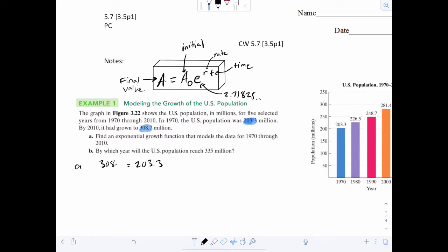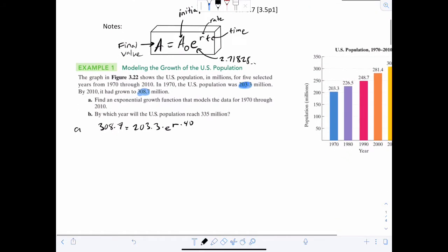And that's going to be times e to the r. And time, think about this, from 1970 to 2010, 40 years have passed. So we're going to put 40 right there. Now we're going to solve for r. So we're going to divide both sides by 203.3. So e to the 40r, that's equal to 308.7 over 203.3.